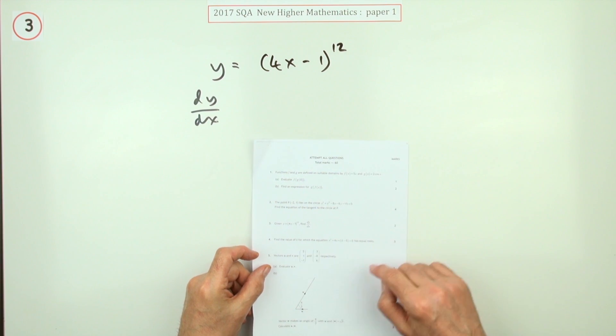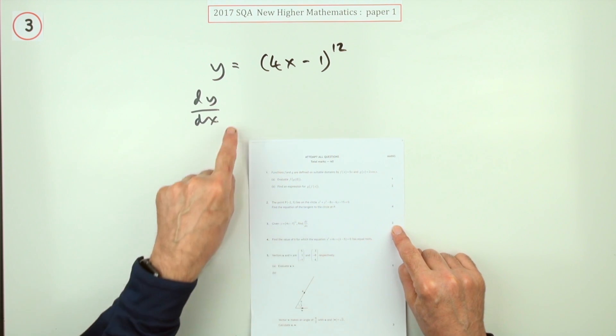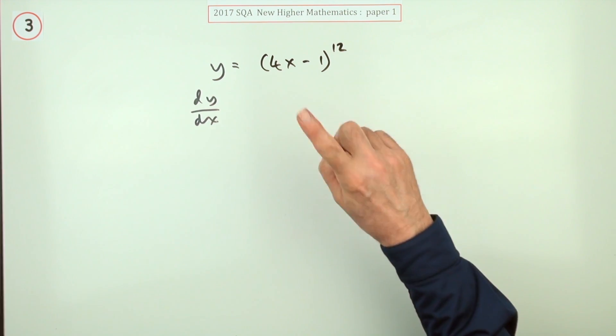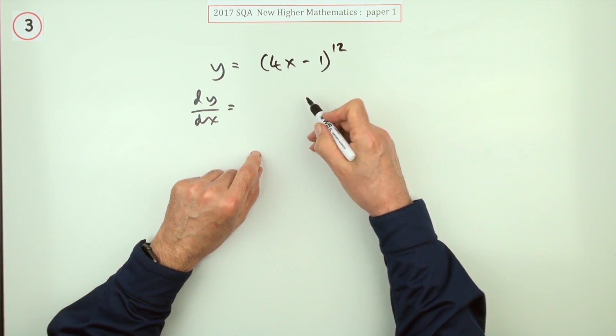Number three from paper one of the 2017 New Higher Maths. Here, just a quick two-mark question: differentiate this. It's a chain rule, it's a function of a function. Don't try and multiply that out, you wouldn't have time for the rest of the exam.